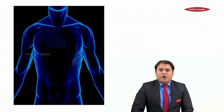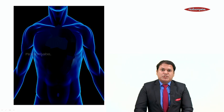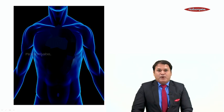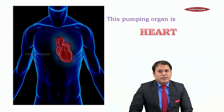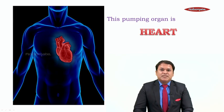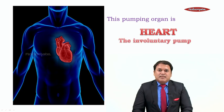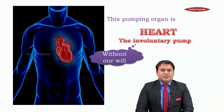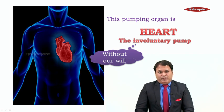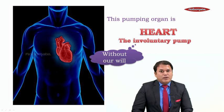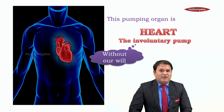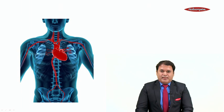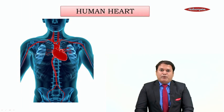Students, we learned that blood is a fluid connective tissue. And we also saw that a pumping organ is needed to push the blood across the body. And this pumping organ is nothing but the most important organ of the body, which is the heart. Now heart is the involuntary pump, which means it functions without our will. Heart is an organ of our body which works 365 days a year, 24 hours a day. It keeps on beating. Now let us study about the human heart.